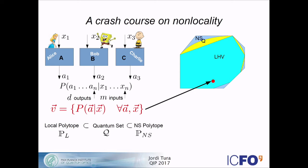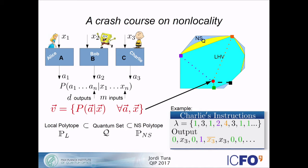If I consider a local hidden variable model, this forms what is called the local polytope. We know that quantum correlations lie outside of this polytope, and more general no-signaling theories are even larger. The local polytope is easy to describe in terms of vertices, which correspond to deterministic strategies. For example, if lambda is your hidden variable taking several values, according to each value Charlie has a set of instructions and produces a deterministic output. Depending on how this value is distributed, the point can move only inside the local polytope. A Bell inequality is a witness — a facet of this polytope.